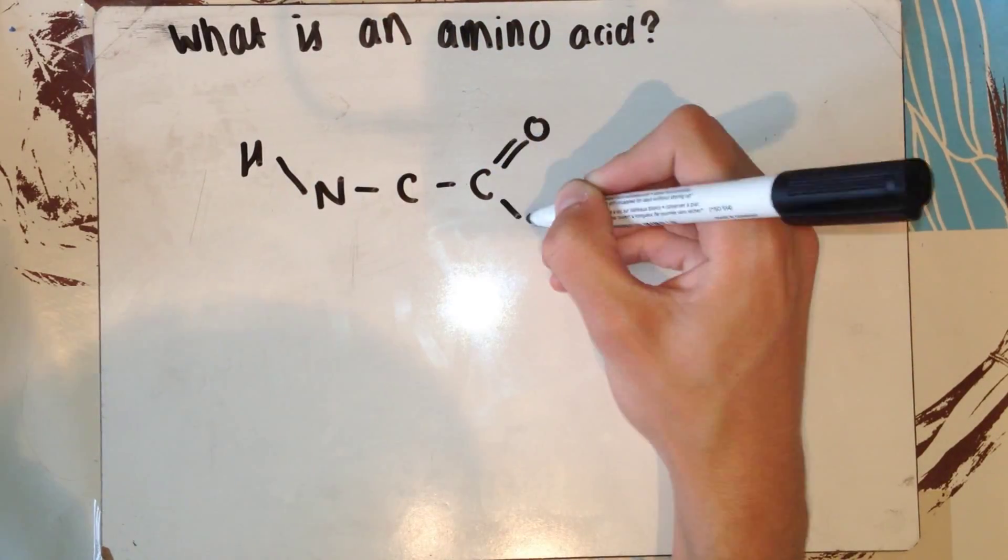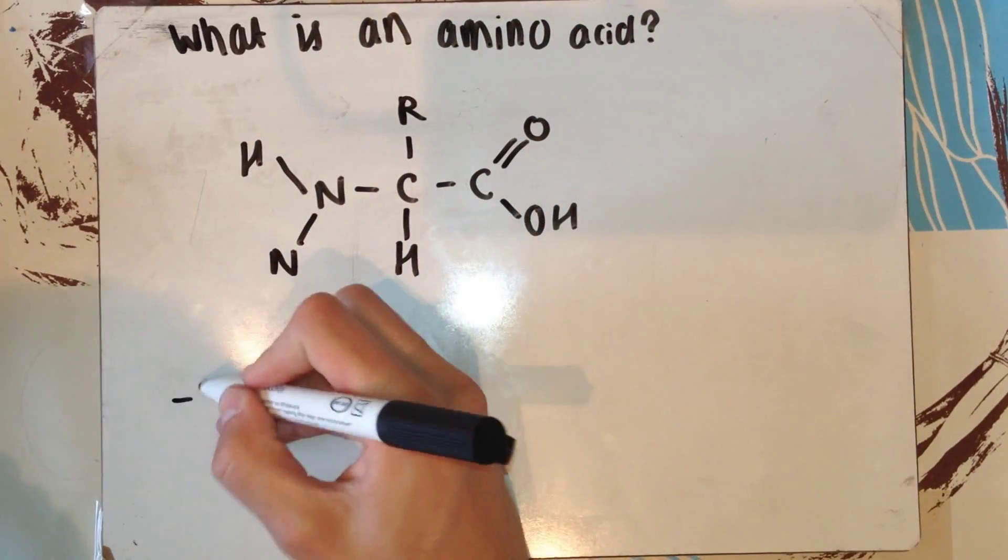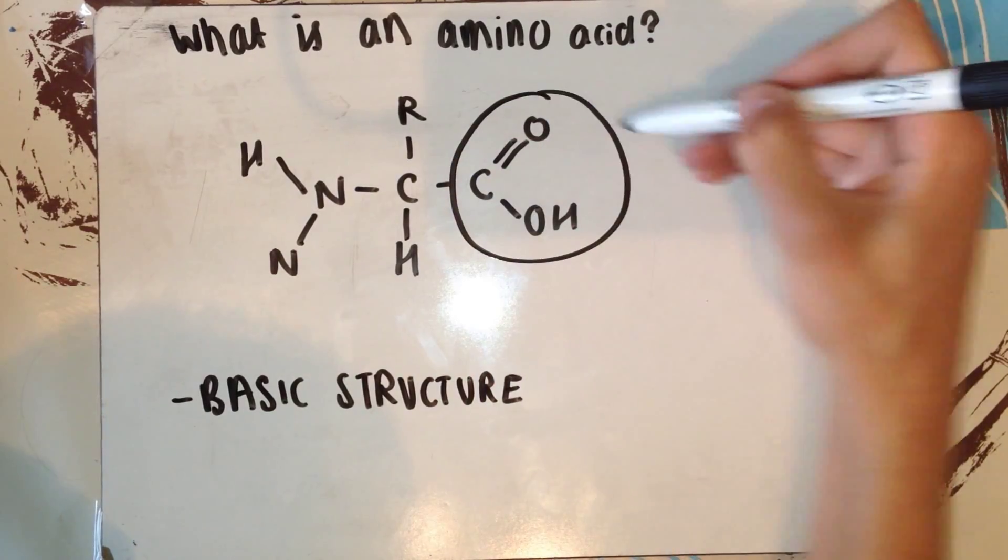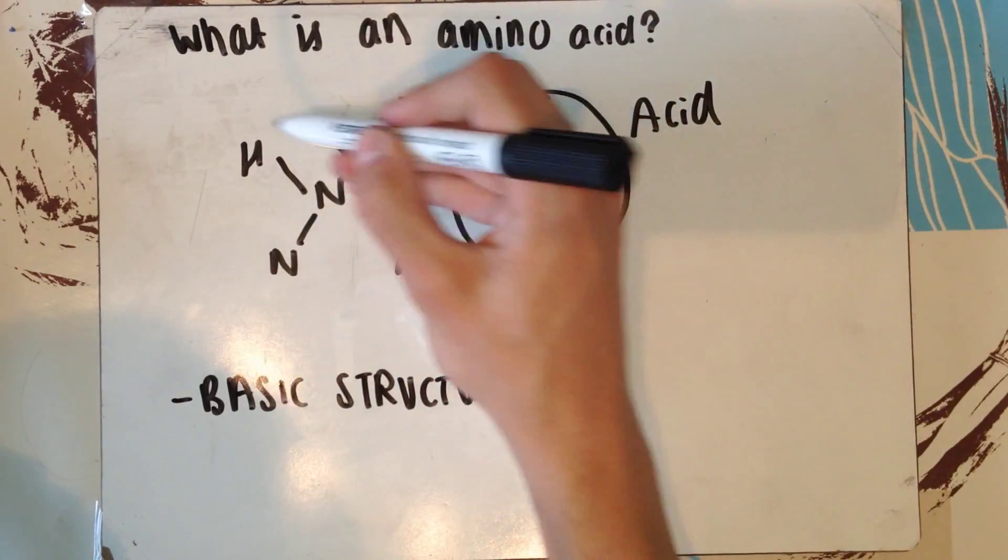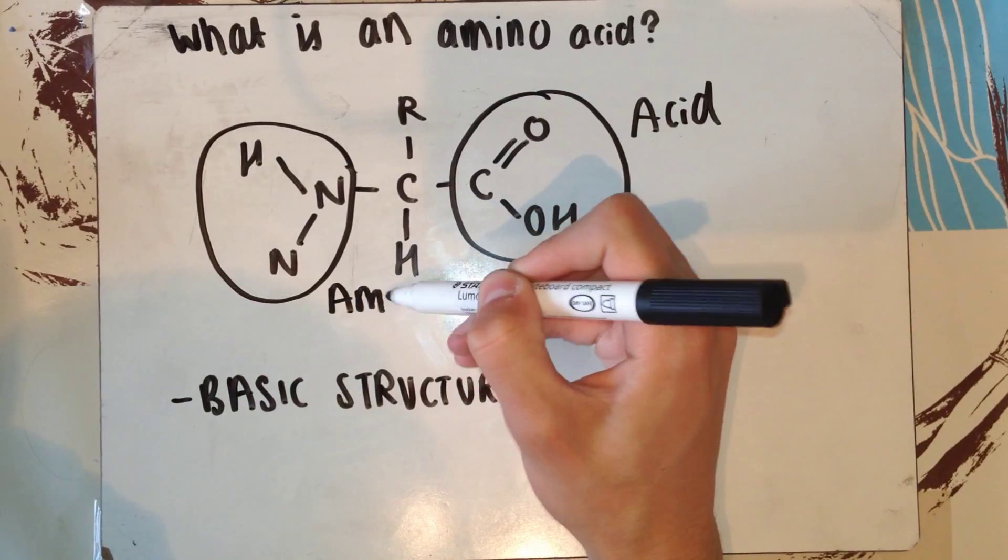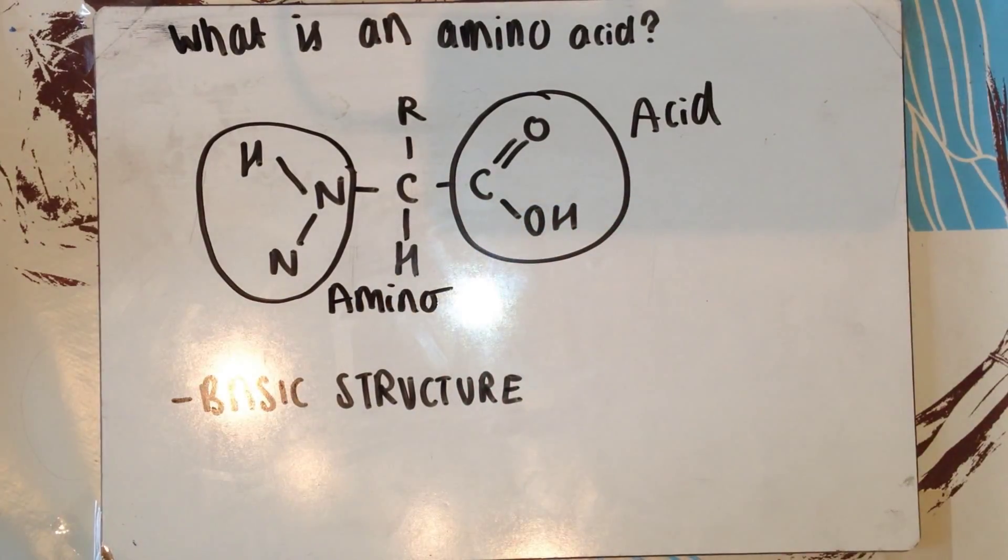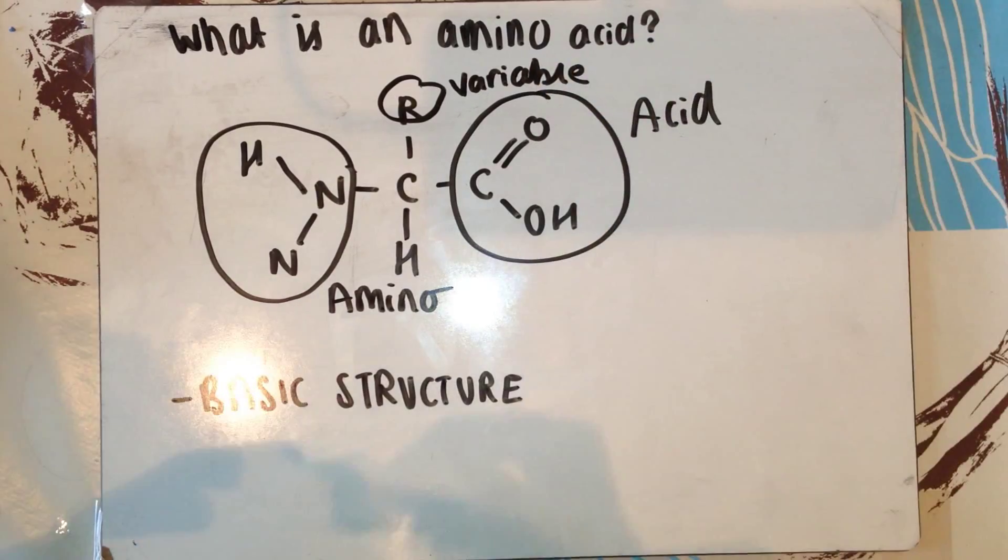This here is the basic structure of any amino acid. As you can see, you have the carboxylic acid group and then you have the amino group. You also have an R group. This R group is variable and can change.